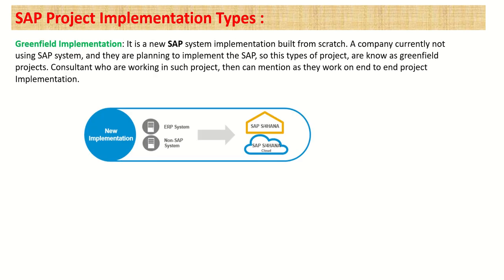The first is the implementation project, and that is a greenfield implementation. A greenfield implementation means a company is currently not using an SAP system. They might be using some other ERP or non-SAP system and they want to implement SAP. This is called a fresh implementation — where there is no SAP system in that company and we have to work from scratch.